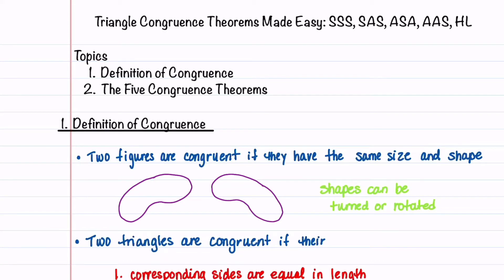Did you know that congruence theorems are just simple ways to show that two triangles have the same size and the same shape? By the end of this video, you'll understand everything you need to know about all five congruence theorems.